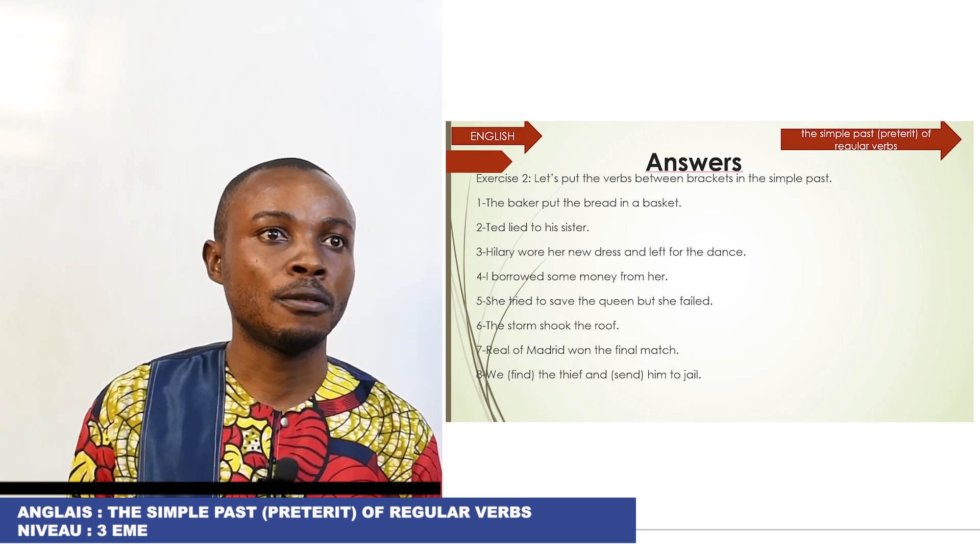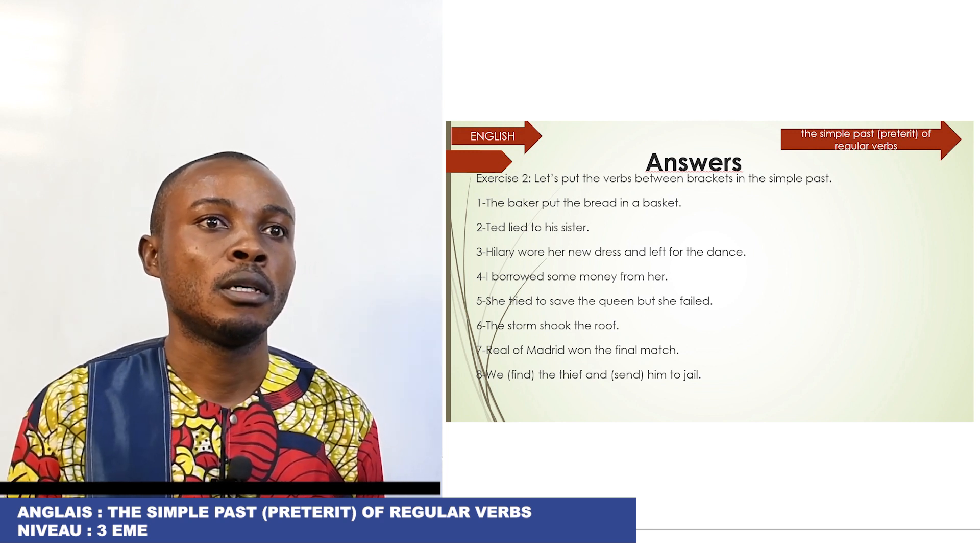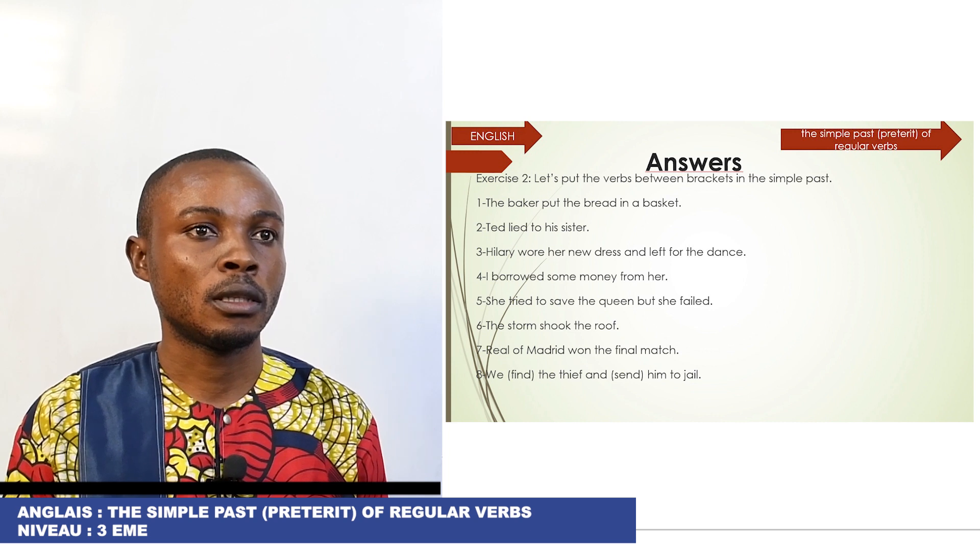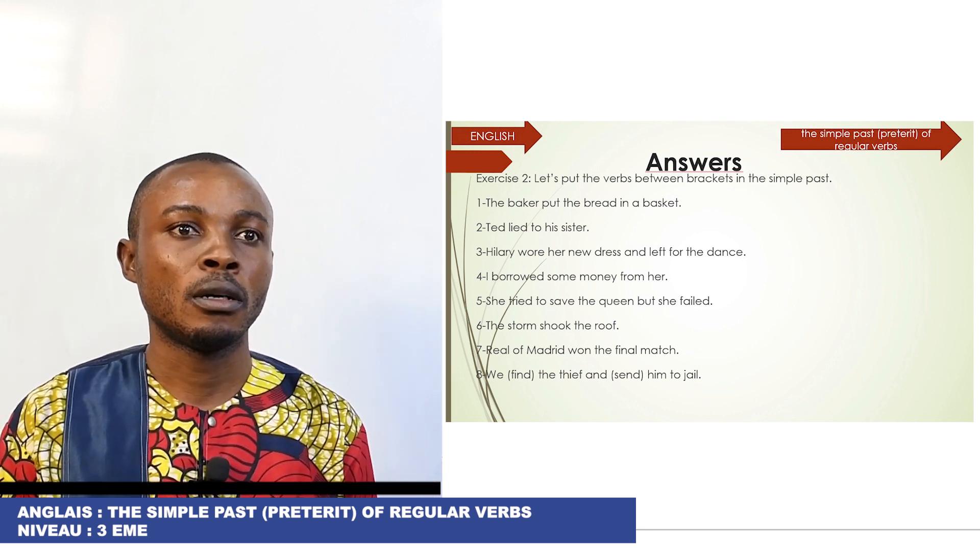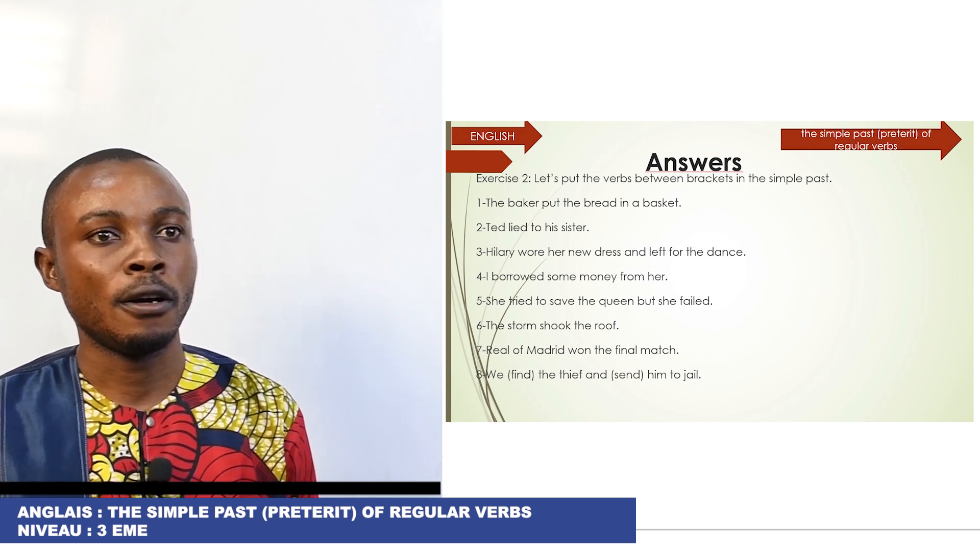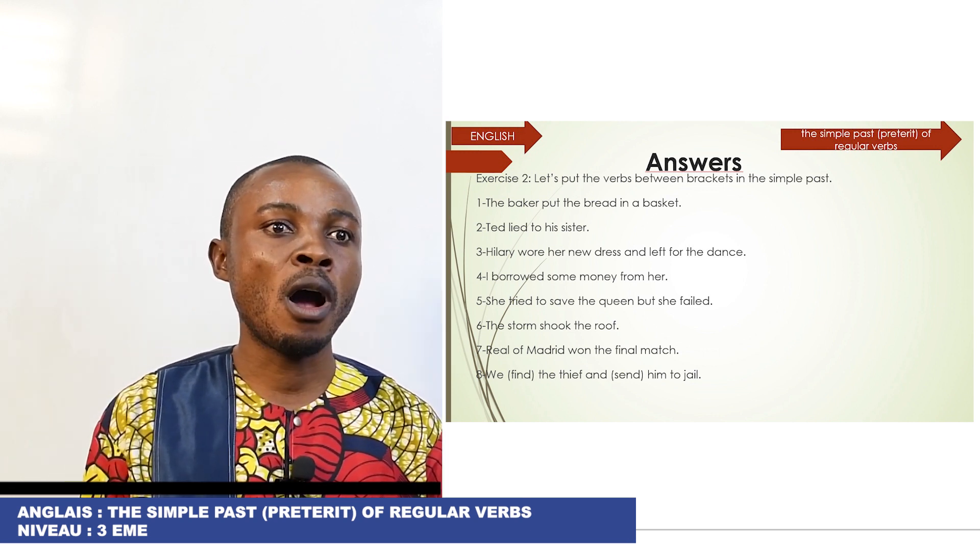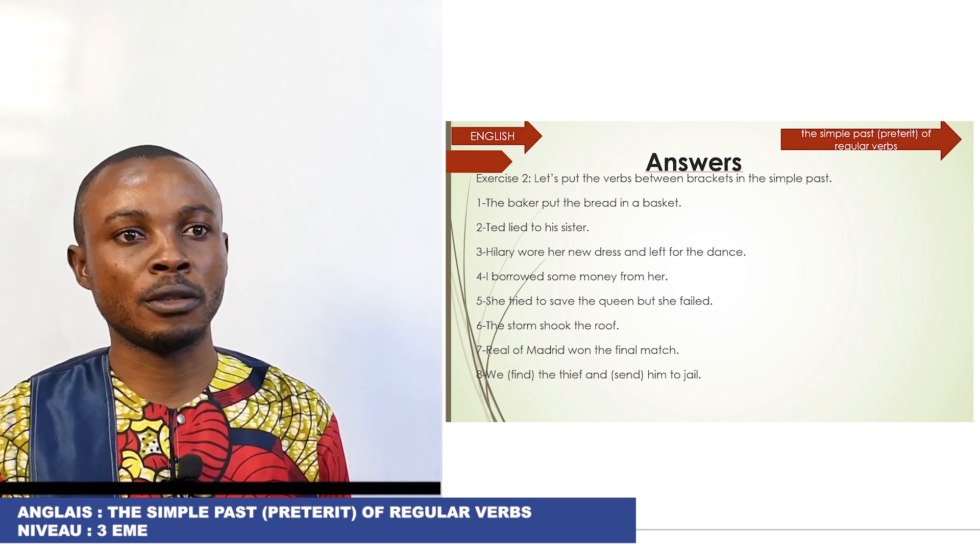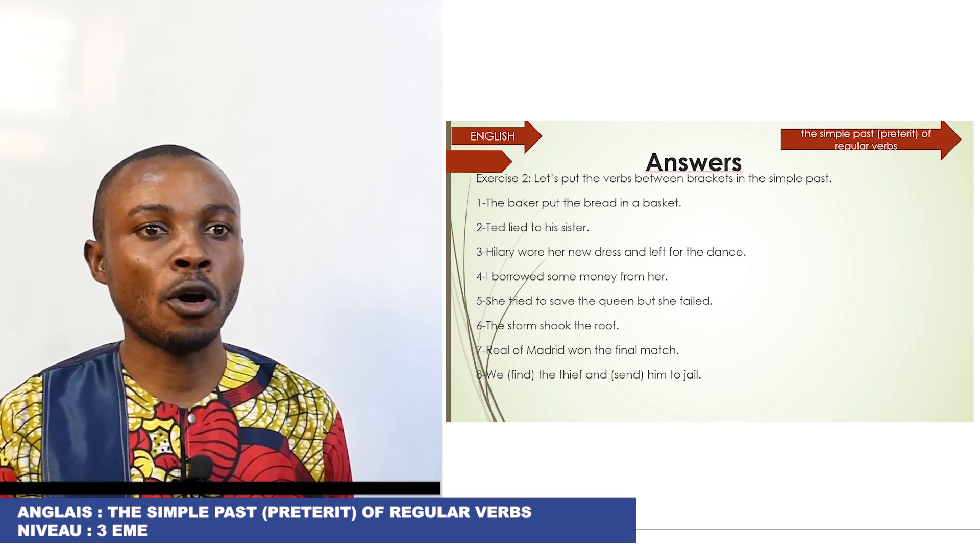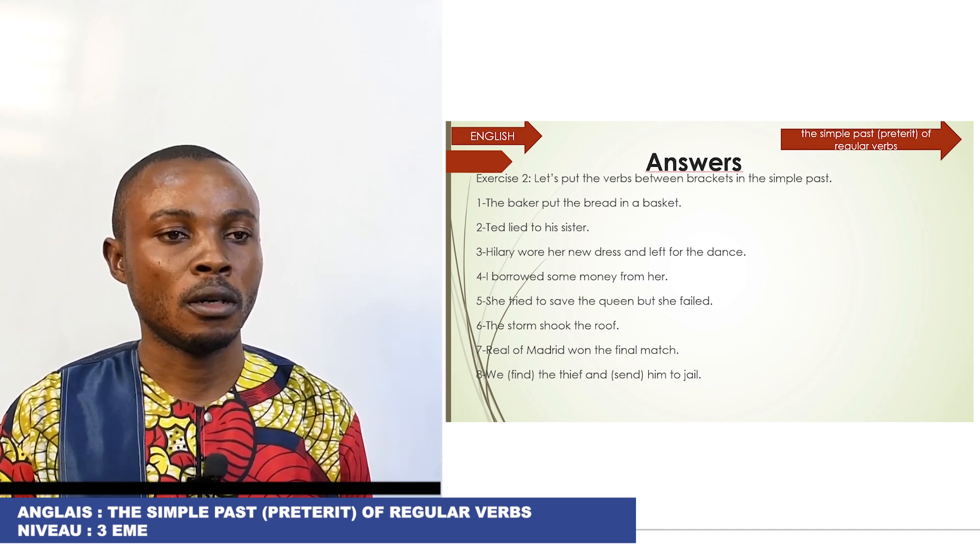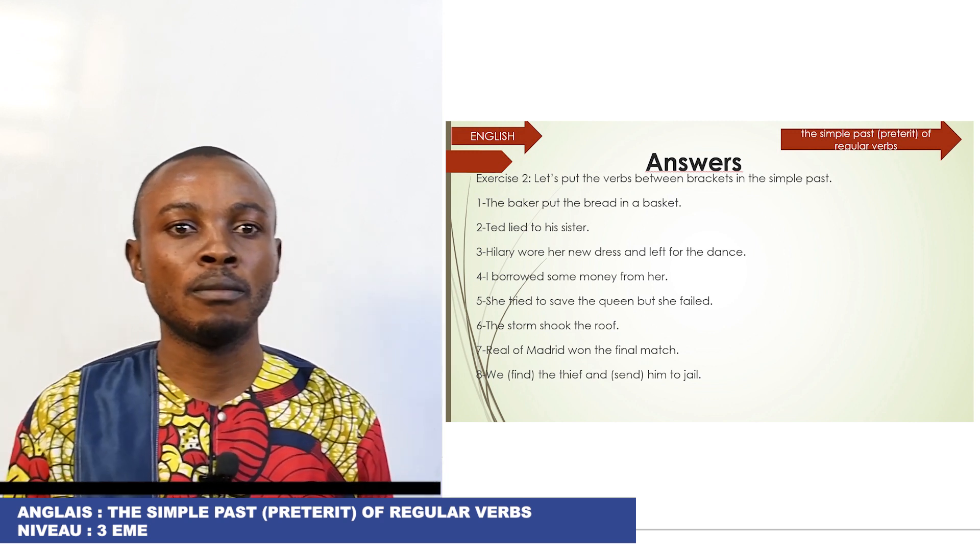Here we have the answers for exercise number two. If you found it, congratulations. Number one: The baker put the bread in the basket. Number two: Ted lied to his sister. Three: Hillary wore her new dress and left for the dance. Four: I borrowed some money from her. Five: She tried to save the queen, but she failed. Six: The storm shook the roof. Seven: Real Madrid won the final match. Eight: We found the fifth and seventh team to zero.